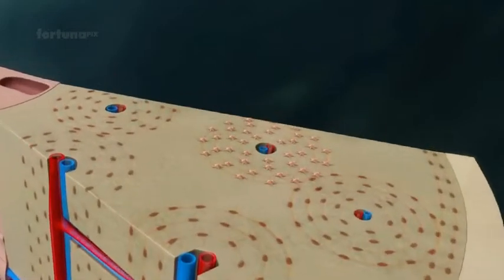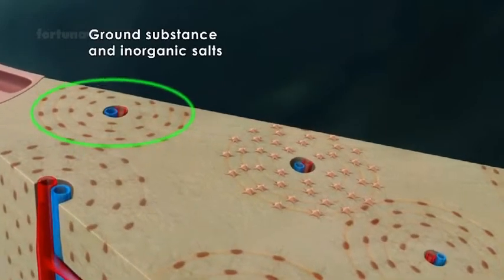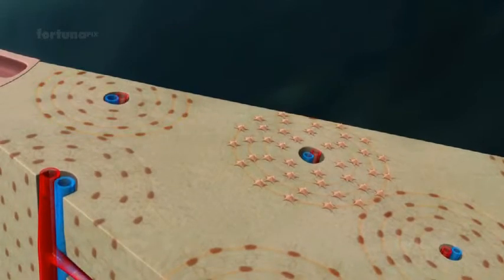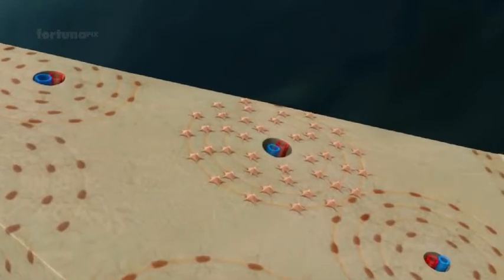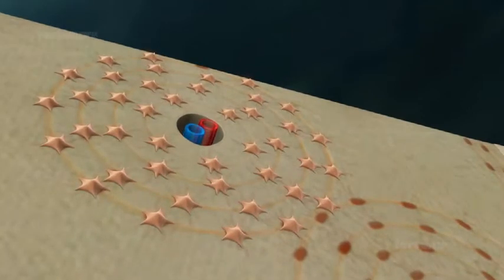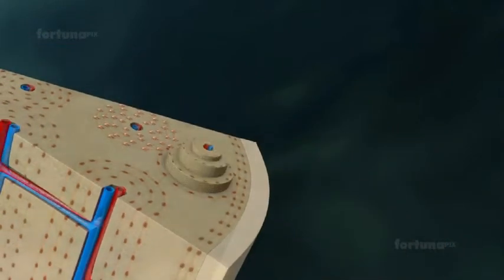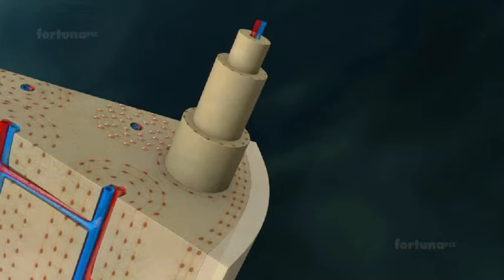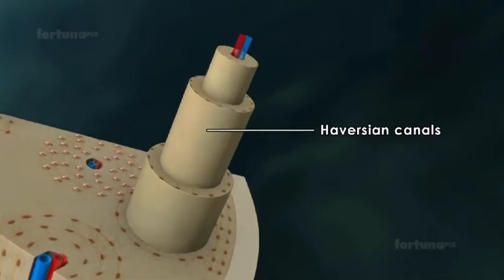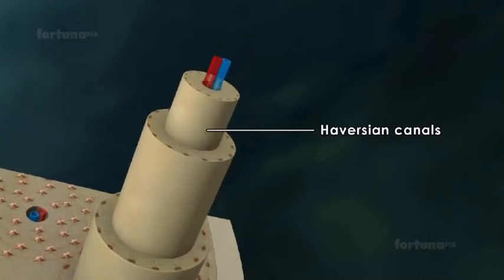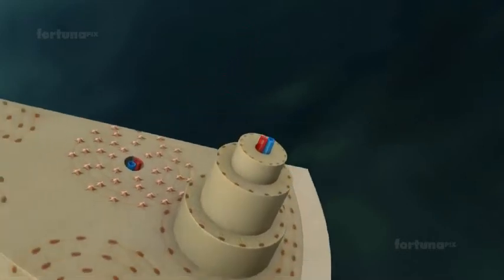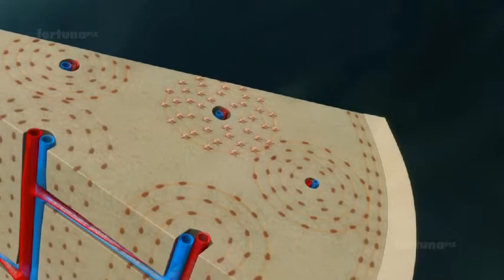This dense layer is filled with organic ground substance and inorganic salts. In between these substances are very tiny spaces that contain the bone cells known as osteocytes. As compact bone matures, it develops a network of interconnecting vascular canals referred to as Haversian canals, which contain blood vessels that supply nutrients to the osteocytes. The compact bone surrounds the Haversian canals in layers known as osteons.